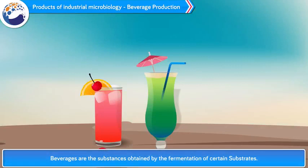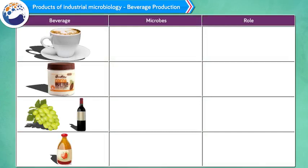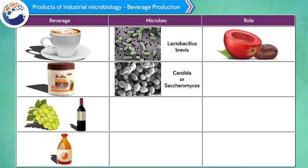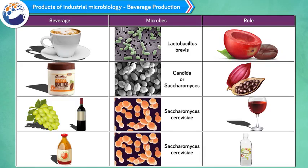E. Beverage production. Beverages are substances obtained by the fermentation of certain substrates. Examples of beverages are coffee, cocoa, wine, beer, etc. 1. Coffee is obtained by microbe Lactobacillus brevis. Role: it helps in separating seeds from fruit. 2. Cocoa is obtained by microbe Candida or Saccharomyces. Role: it helps in separating seeds from fruit. 3. Wine is obtained by microbe Saccharomyces cerevisiae. Role: it helps in fermentation of the juices. 4. Cider is obtained by microbe Saccharomyces cerevisiae. Role: it helps in fermentation of the juices.